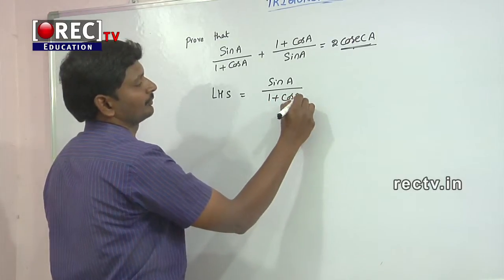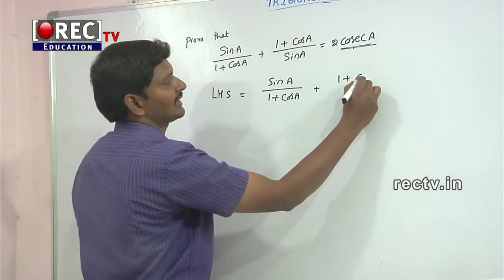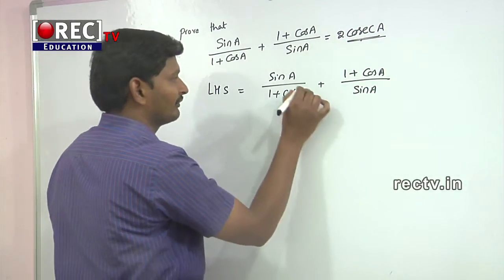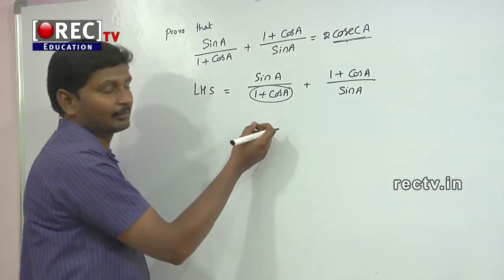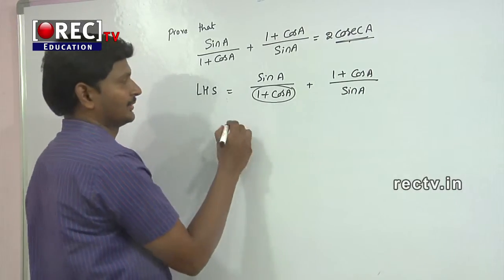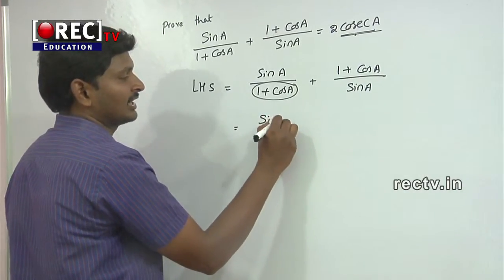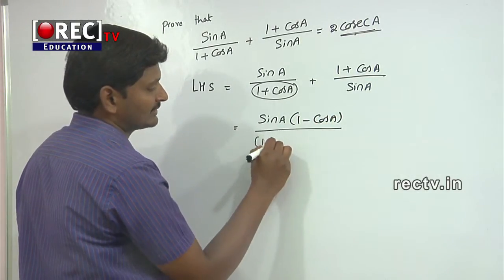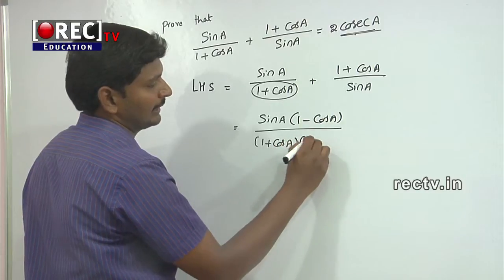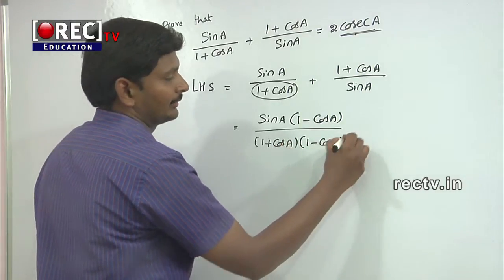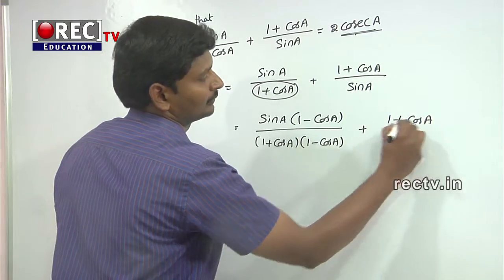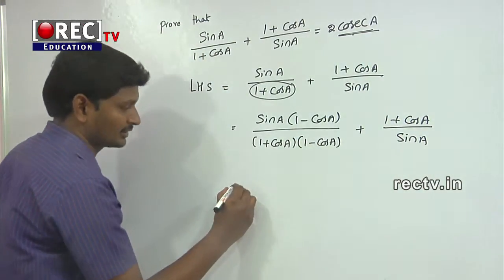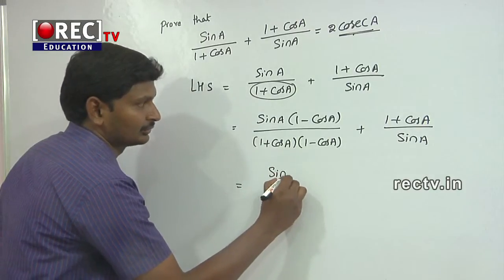The LHS is sin(a)/(1+cos(a)) + (1+cos(a))/sin(a). To simplify the first term, we multiply by (1−cos(a))/(1−cos(a)), giving sin(a)·(1−cos(a)) divided by (1+cos(a))·(1−cos(a)). The second term, (1+cos(a))/sin(a), remains unchanged as it already contains 1/sin(a), which is cosecant(a).